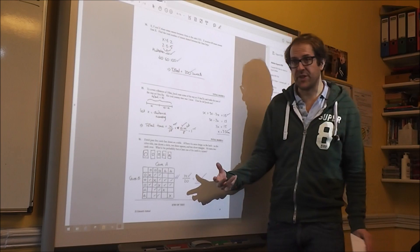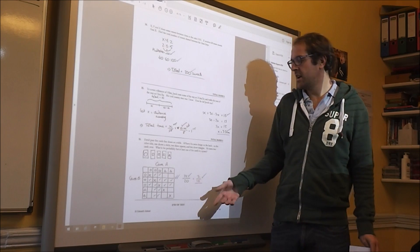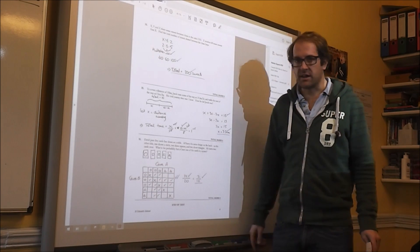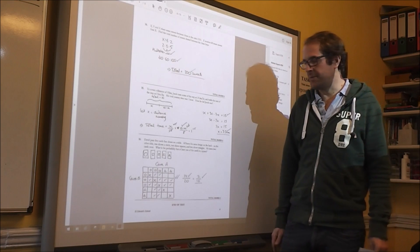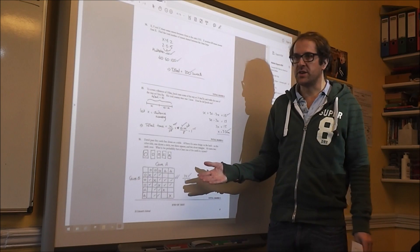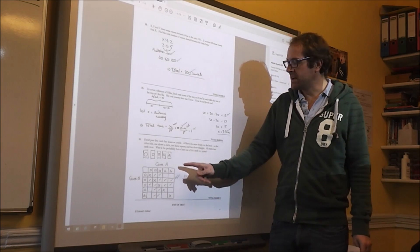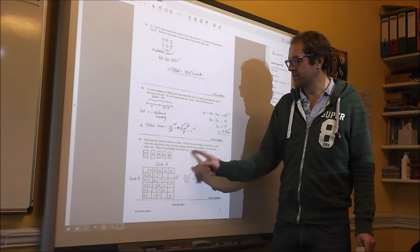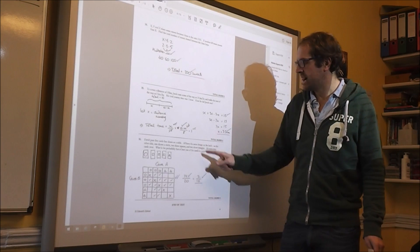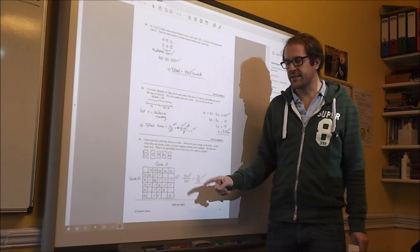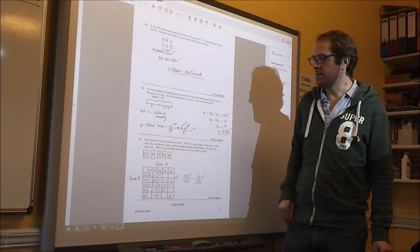Because first of all, it shows my thinking, my logical thought process. And secondly, it's an accurate way of getting an answer. You could have also done it with a probability tree. Square, no square, square, no square, and done it like that. But this one's probably a quicker, easier way for two rectangles.